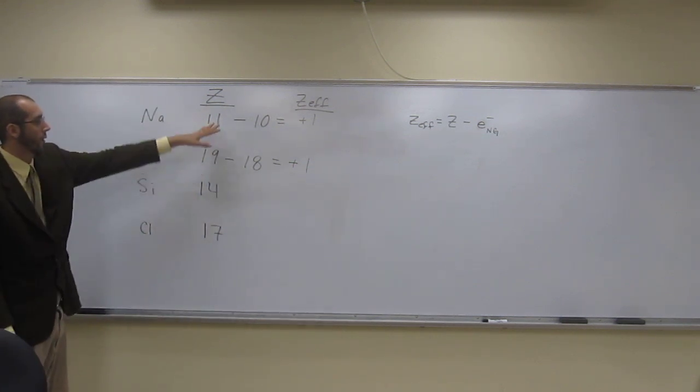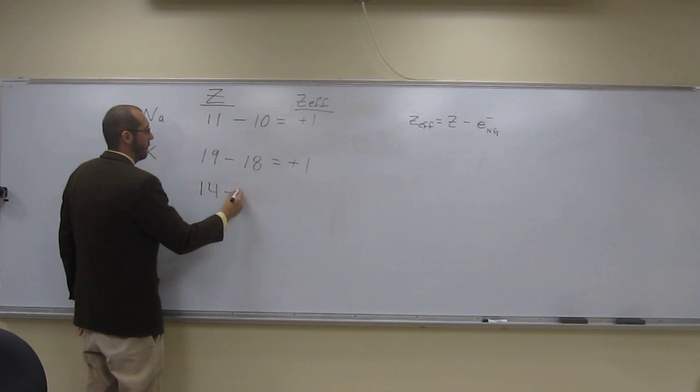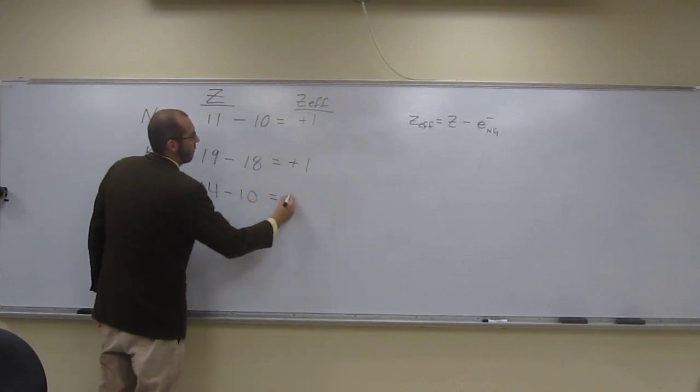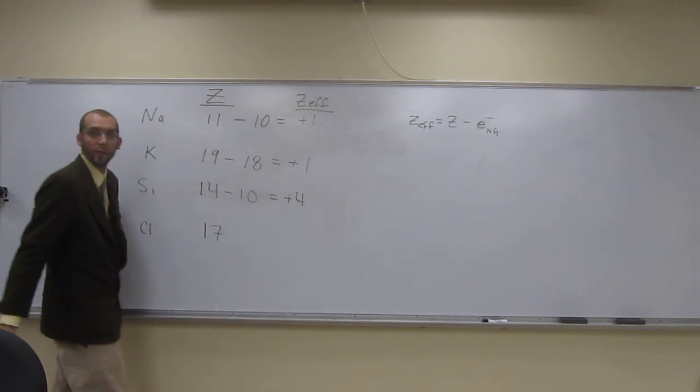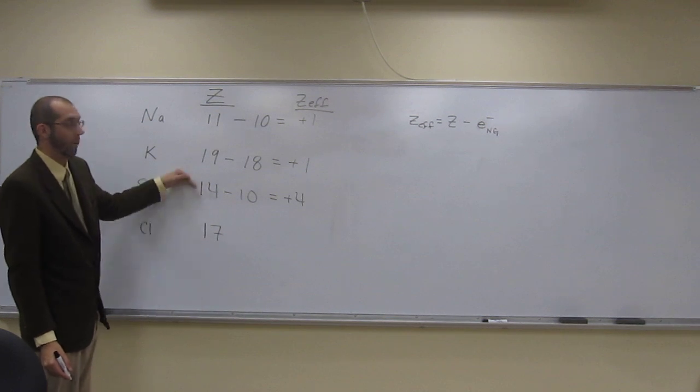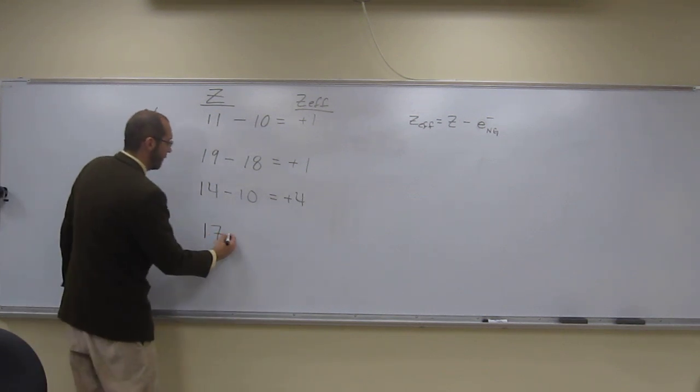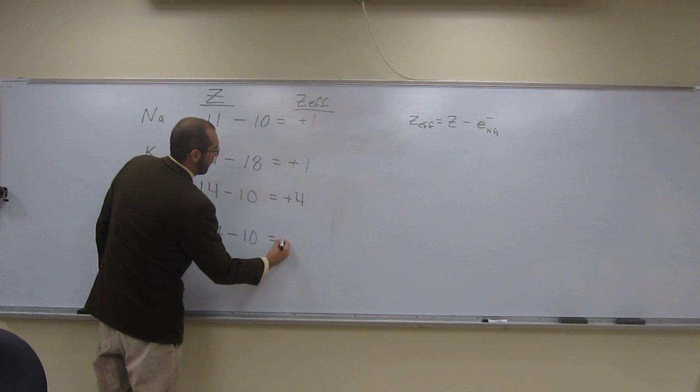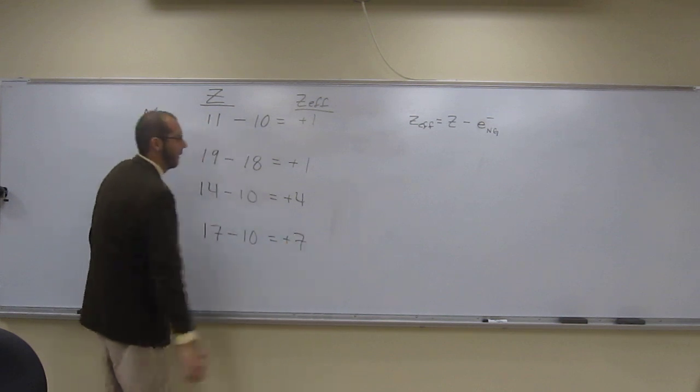This one, of course, is going to be the same as sodium, neon. So plus four will be Z effective. And this one, of course, will also be neon. So it's going to be minus ten. It's going to be plus seven. Okay?